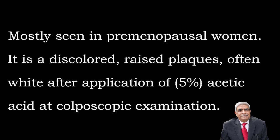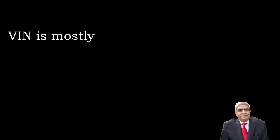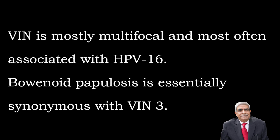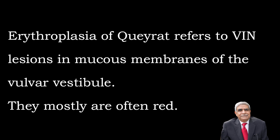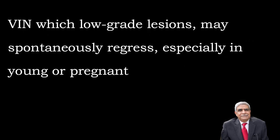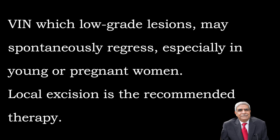VIN is most commonly seen in pre-menopausal women. It presents as discolored raised plaques, often white after application of five percent acetic acid at colposcopic examination. VIN is mostly multifocal and most often associated with human papilloma virus 16. Bowenoid papillosis is the term used for VIN 3. Erythroplasia of Queyrat refers to VIN lesions in mucous membranes of the vulvar vestibule, which are often red.